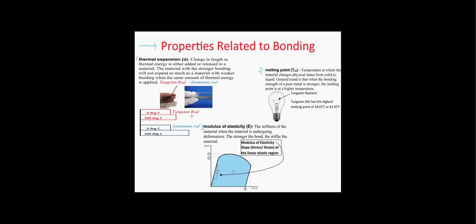Looking at this diagram, we see that both tungsten and aluminum were raised the same amount — 500 degrees Celsius — but the tungsten rod did not expand as much as the aluminum rod. From this, we can say that tungsten has a higher bond strength than aluminum.